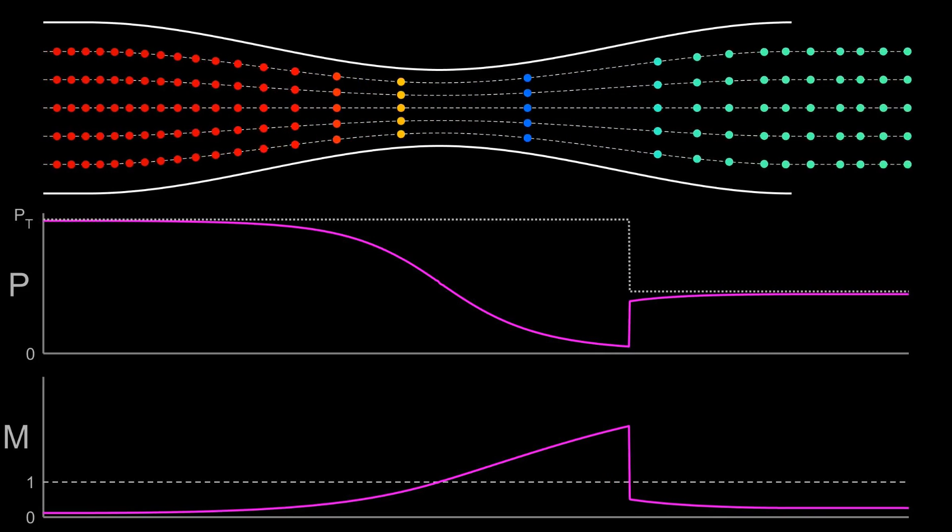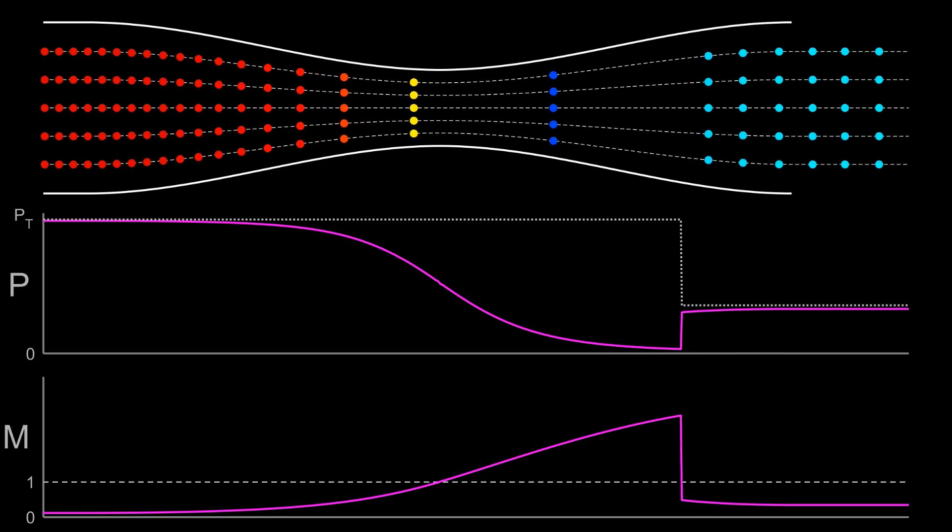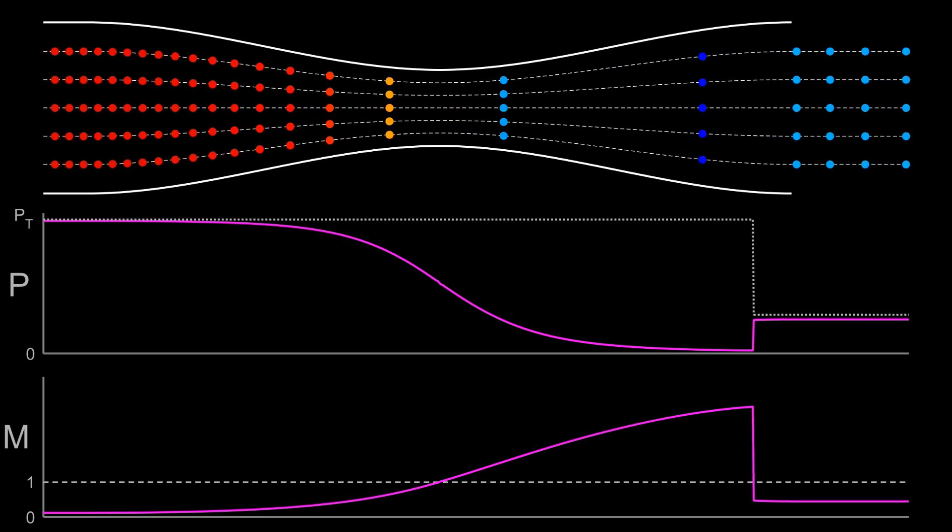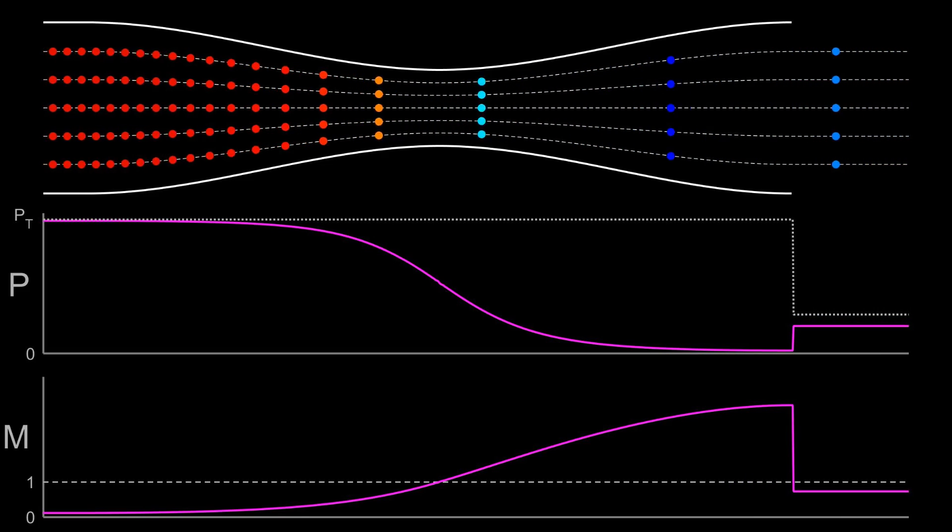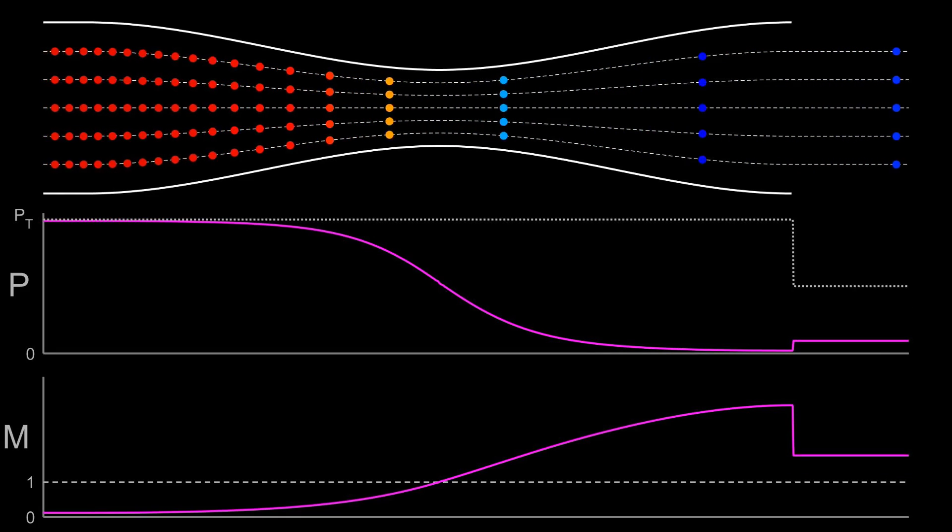Neither the supersonic or the subsonic expansion alone can match the nozzle exit pressure with the atmospheric pressure, and so a small amount of both is needed. A normal shock is nature's way of transitioning between the two flow regimes.